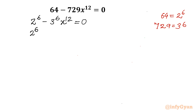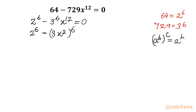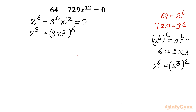I can rewrite this equation as 2 power 6 minus (3x²) whole power 6. Using the exponent property — a power b whole power c equals a power bc — I can consider 6 as 2 times 3. So 2 power 6 becomes (2 power 3) whole power 2.